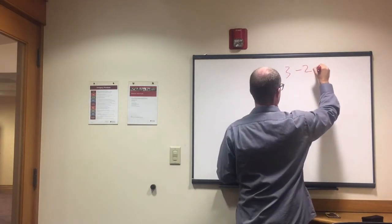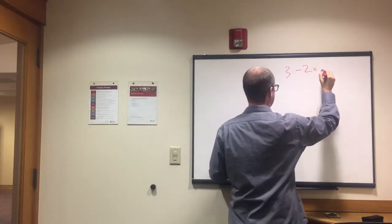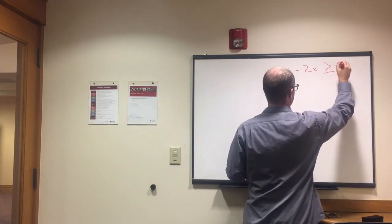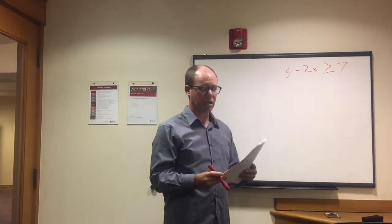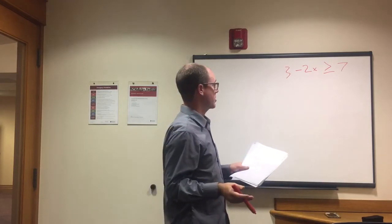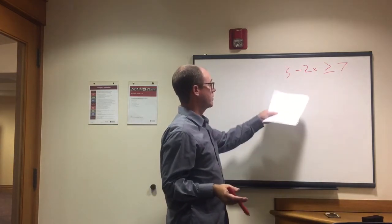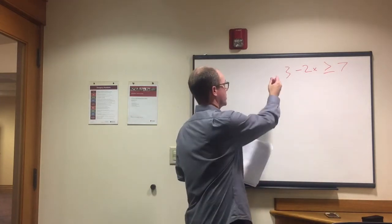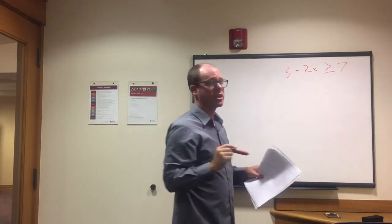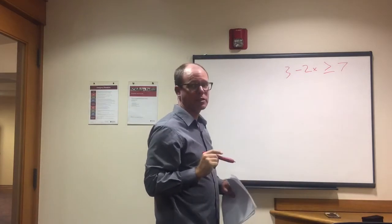3 - 2x ≥ 7. Okay. Same process here. Except we don't have any fractions. You don't have to worry about that. So the first thing is get rid of this 3 over here on the left side. So we can have -2x by itself.